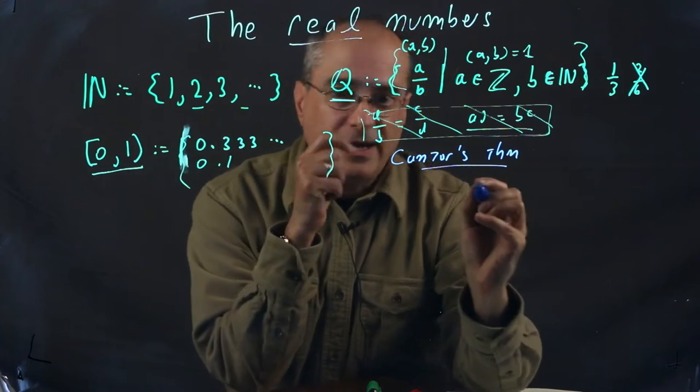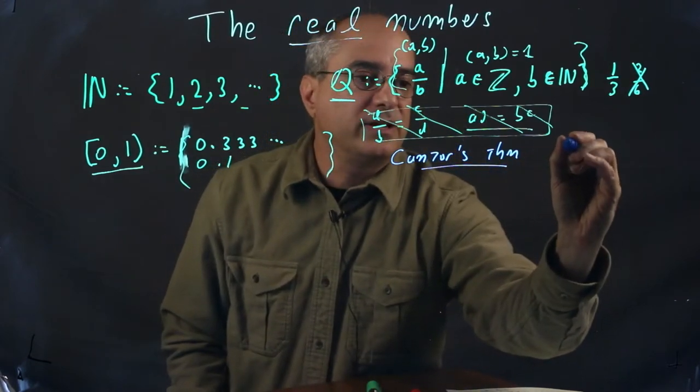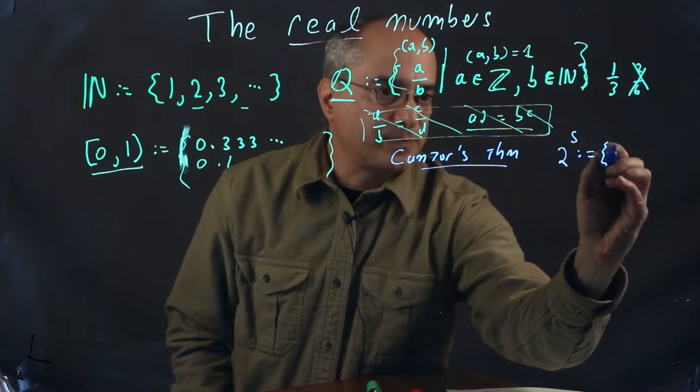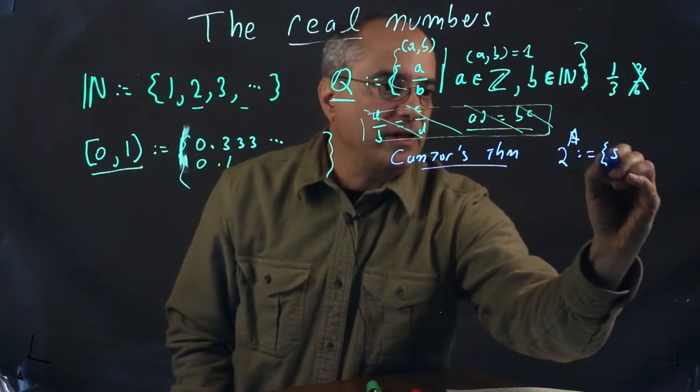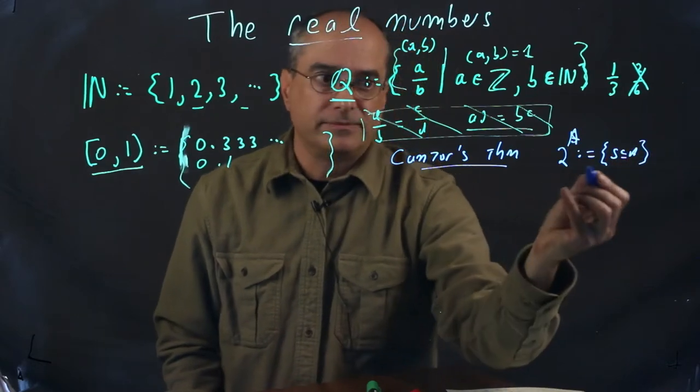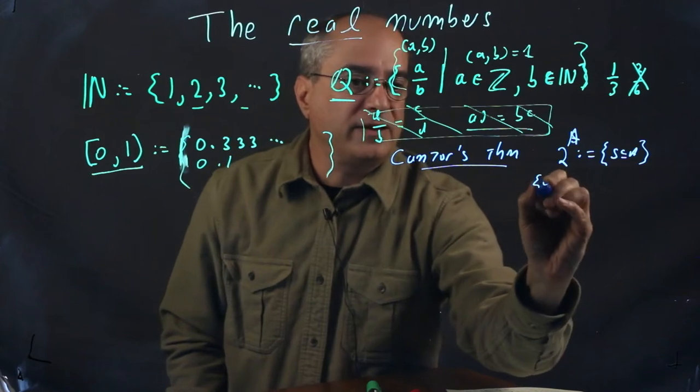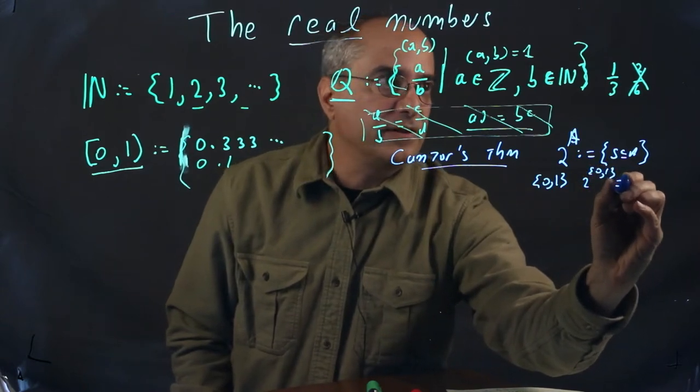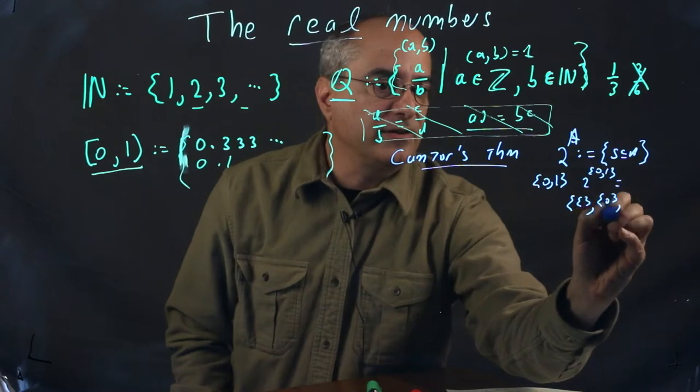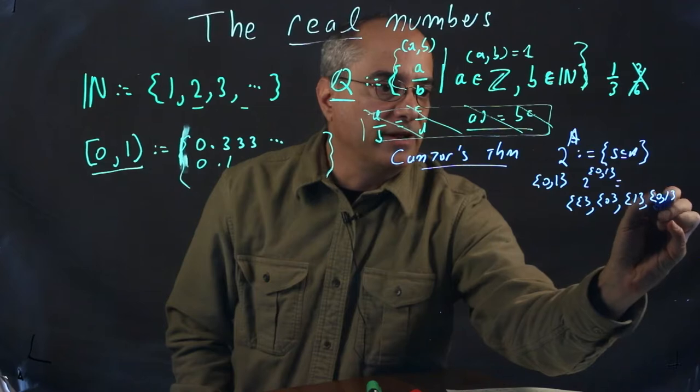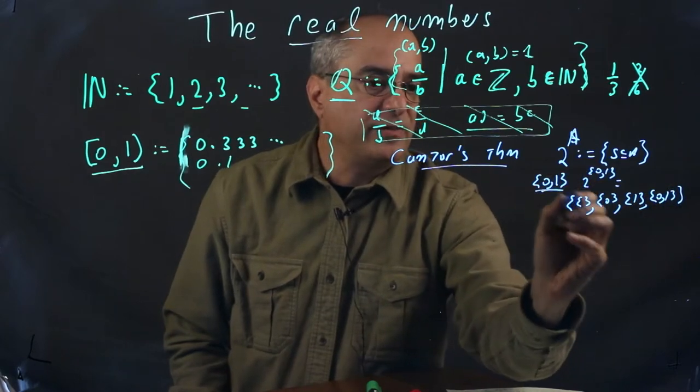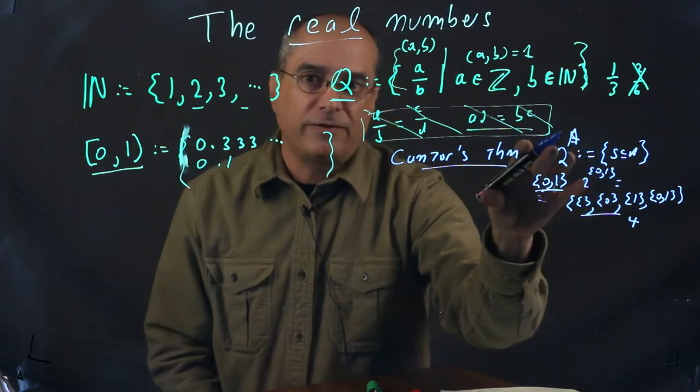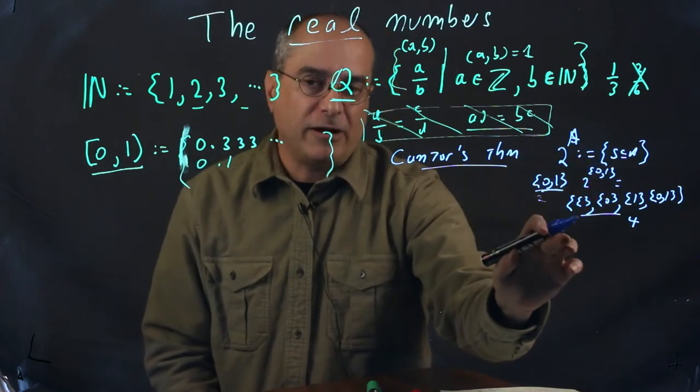Now, we define the power set of any set, which is written in this case as 2 to the A, is defined as all of the subsets contained in A as a set. So, for instance, if our set is {0, 1}, then 2 to the {0, 1} is the empty set, the set containing 0, the set containing 1, and the whole shebang {0, 1}. This is every possible subset of this set, and this is the power set. Now the notation is again evocative that this is a set of size 2, this is a set of size 4. So, for finite sets, a set of size n has a power set of 2 to the n.